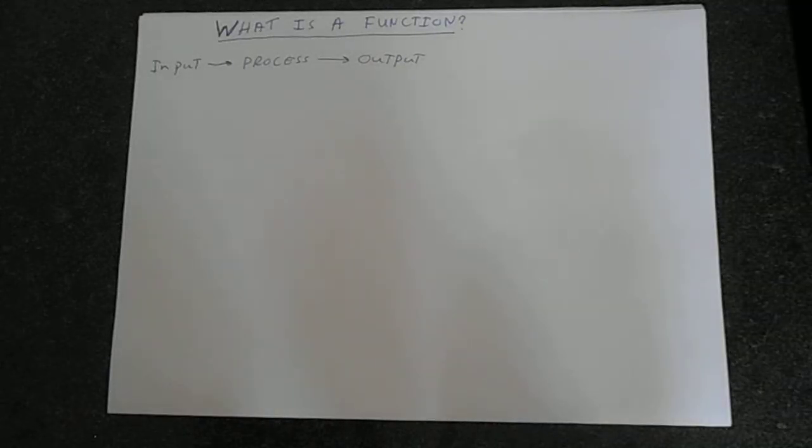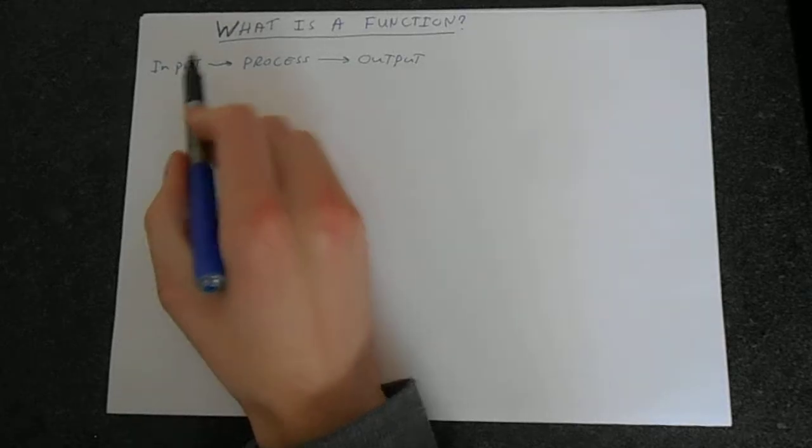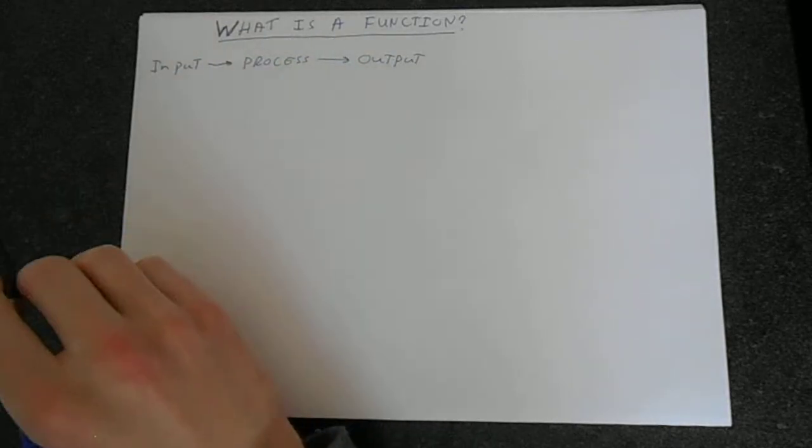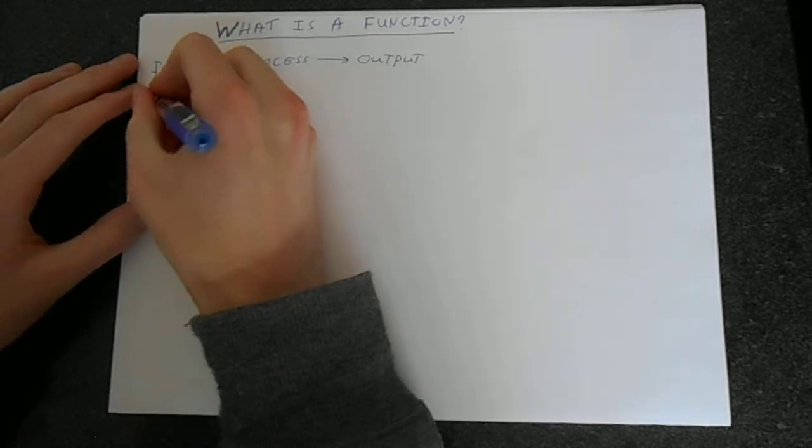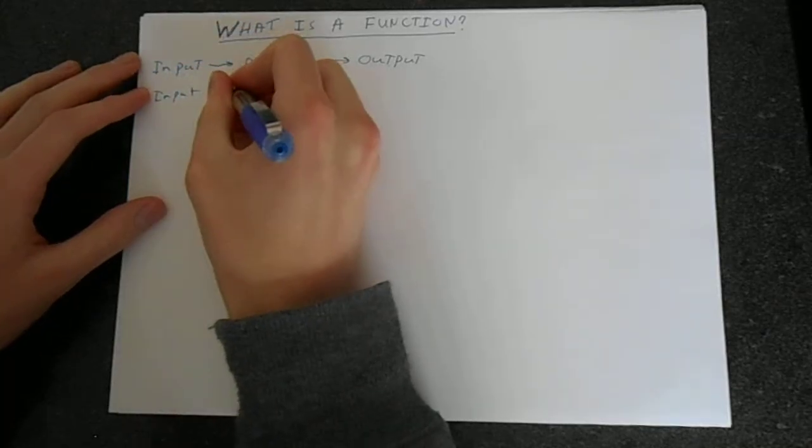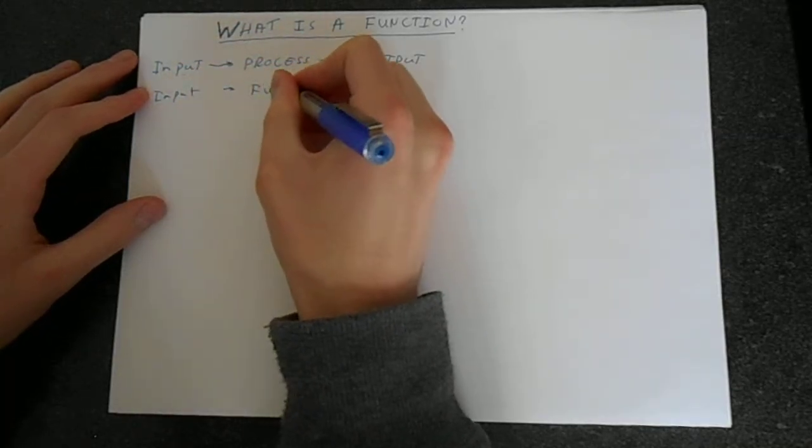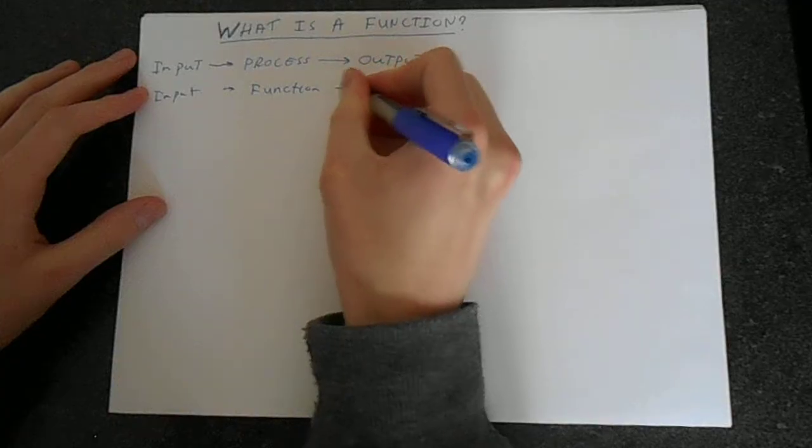The simplest way to think about a function is you've got input, process, and output. We could think about this as input, then function, then output.